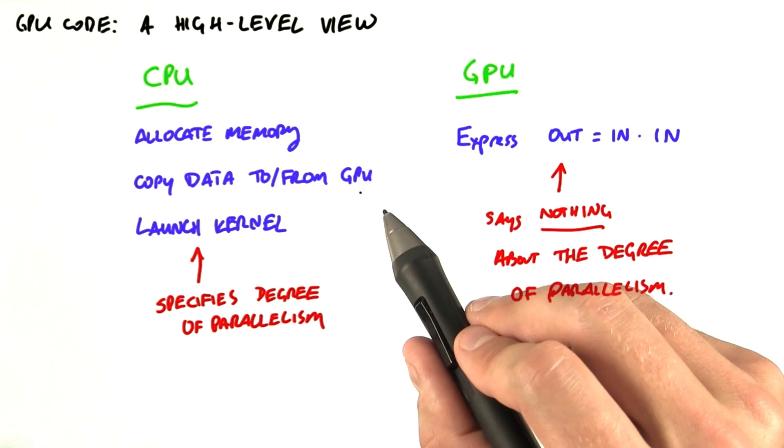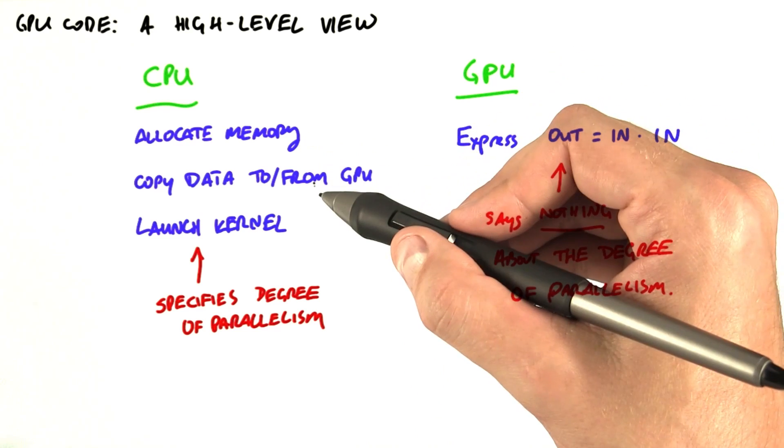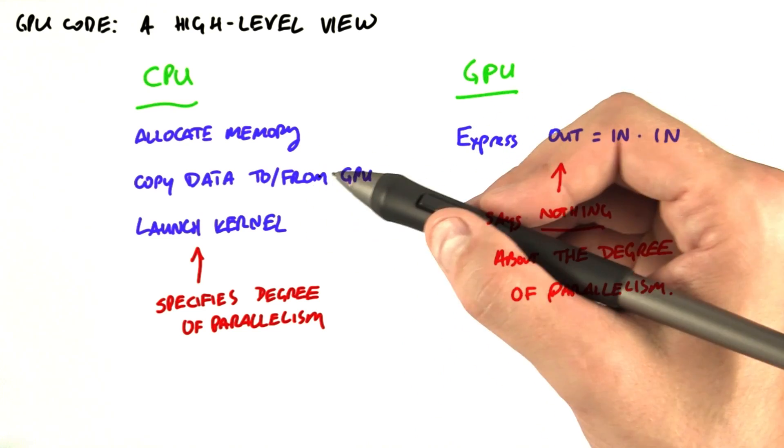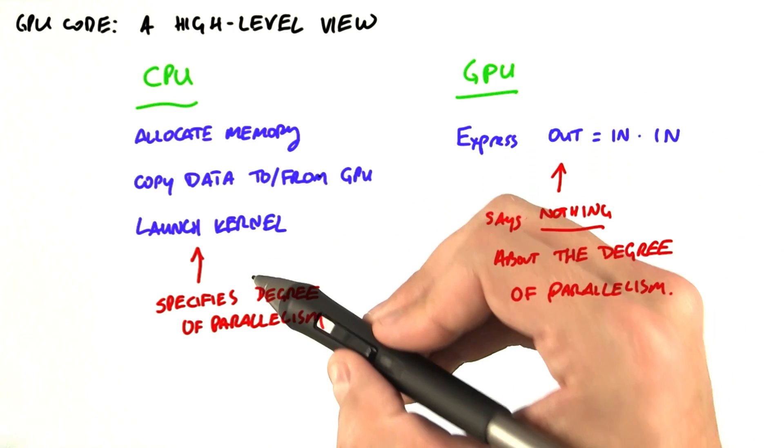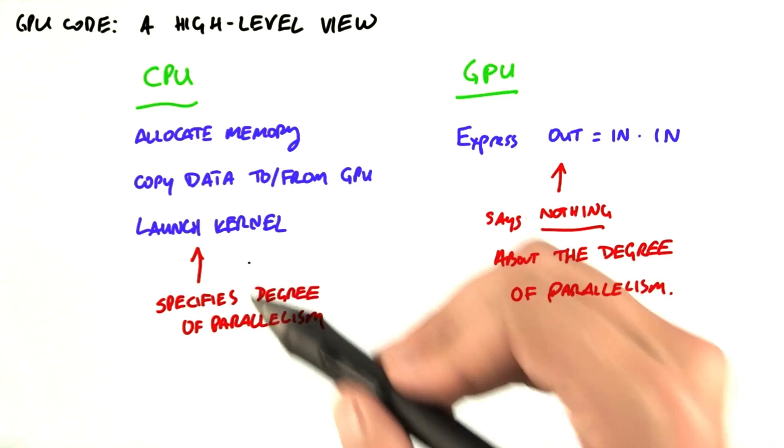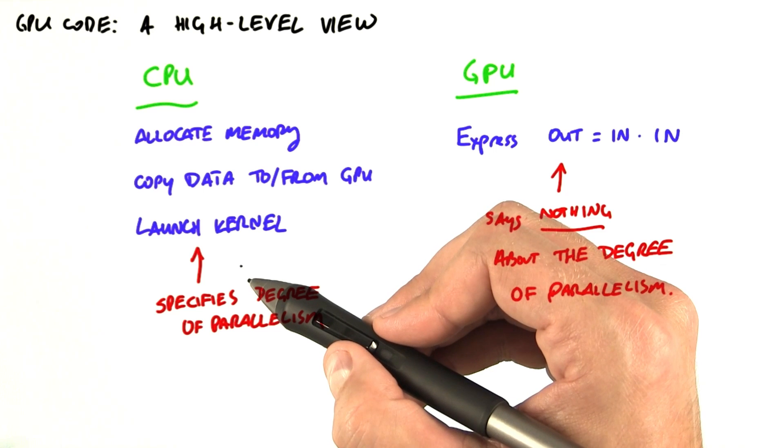What does the CPU do? Well, it has to do the allocation of the memory, copying the data to and from the GPU. But the important part in terms of the computation is that the CPU launches the kernel. This is where the parallelism of threads is expressed.